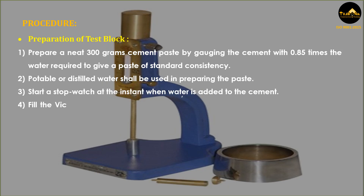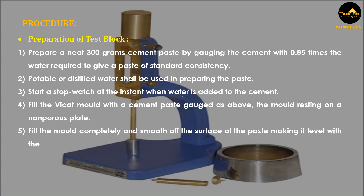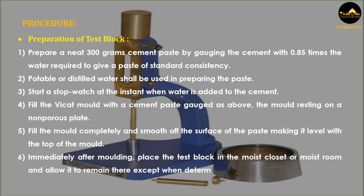Fill the Vicat mold with the cement paste gauged as above, the mold resting on a non-porous plate. Fill the mold completely and smooth off the surface of the paste, making it level with the top of the mold. Immediately after molding, place the test block in the moist closet or moist room and allow it to remain there, except when determinations of time of setting are being made.